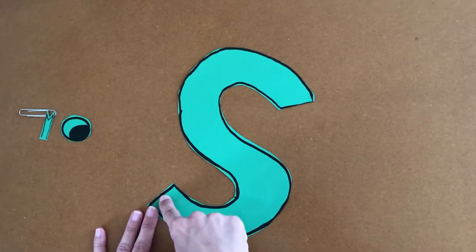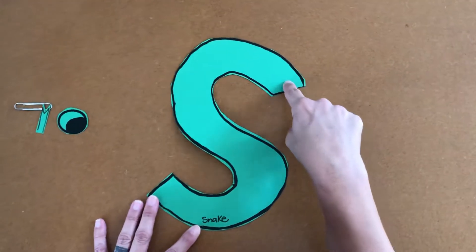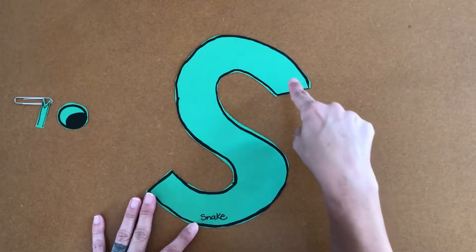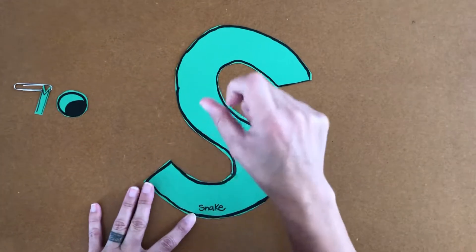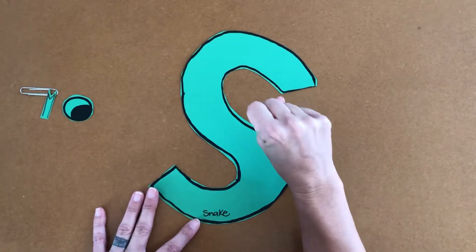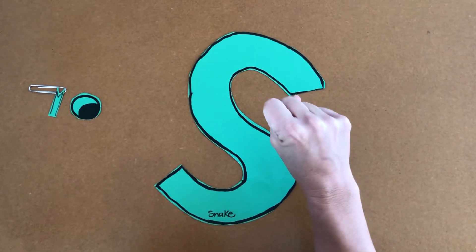We're going to trace it three times starting at the top because our letters always start at the top. Are you ready? It goes like this. Weee stop. Weee stop. One more time. Weee stop. And make the sign for the letter S. Snake.